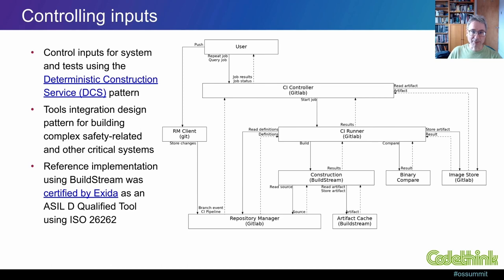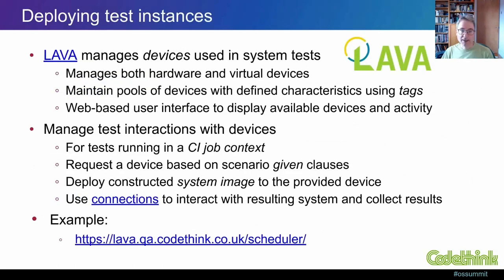Now, these inputs include the build and test environments within which the construction and verification takes place, which includes the container images used by CI jobs, which in our setup are managed by GitLab. Having built all the software that we need for our tests, we still need one more open-source tool to complete our setup. This is Lava, which lets us manage the hardware and virtual devices that are used when deploying our systems for testing. We can use Lava to define pools of devices with different characteristics using tags. These might be used to distinguish between devices with different peripherals, for example, or different processor architectures. There's a web-based GUI that can provide us with a useful window on our devices.